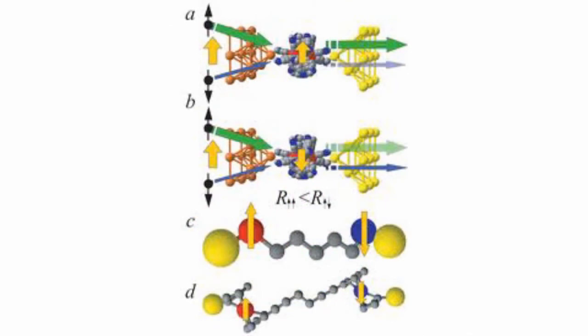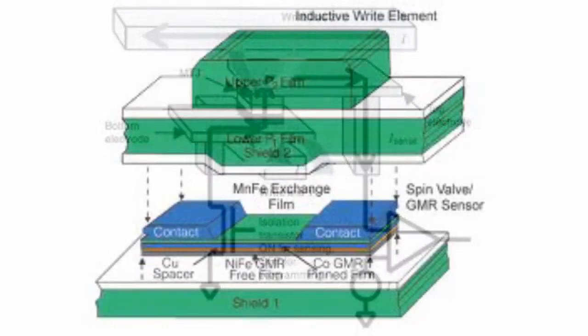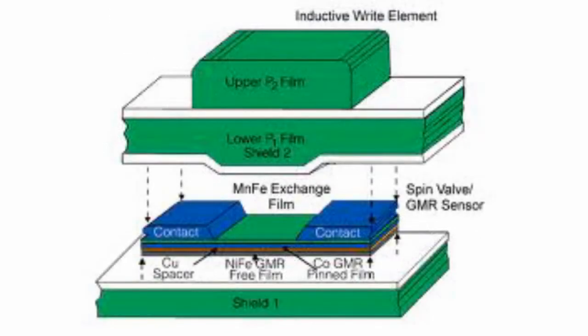A memory device is built from a grid of such cells. The simplest method of reading is accomplished by measuring the electrical resistance of the cell. Each cell is associated with a transistor that switches current from a supply line through the cell to ground. Due to the magnetic tunnel effect, the electrical resistance of the cell changes associated with the orientation of the fields in the two plates. By measuring the resulting current, we can determine the resistance inside any particular cell and the polarity of the writable plate.